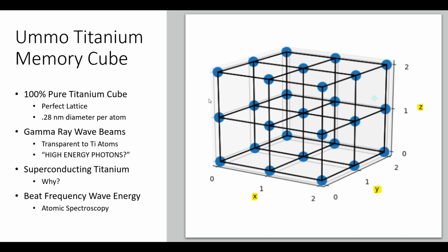We have a requirement for a 100% pure titanium cube. Most likely what that does is set up a perfect lattice, so the beams can locate a single atom at the exact XYZ location every time. The width of a titanium atom is only 0.28 nanometers — this is below nanotech, or picometer technology. Another requirement is the gamma ray frequency wave beams: to manipulate atoms inside the middle of a metal block, you start with wave beams of high enough frequency that they pass right through the metal as if it were transparent.